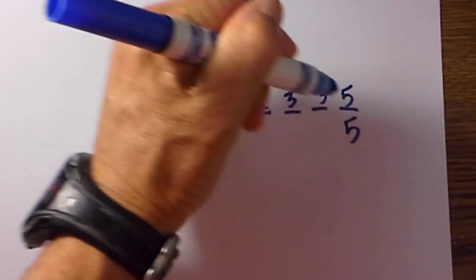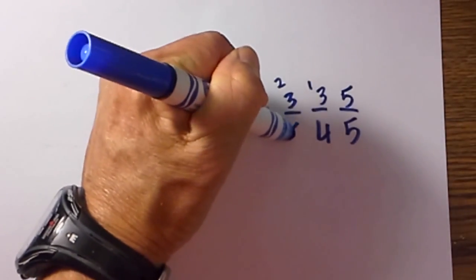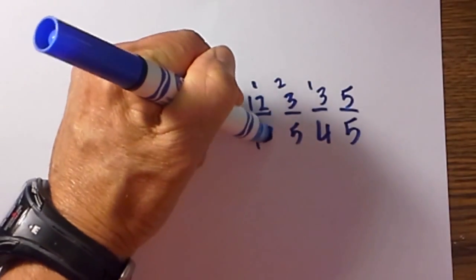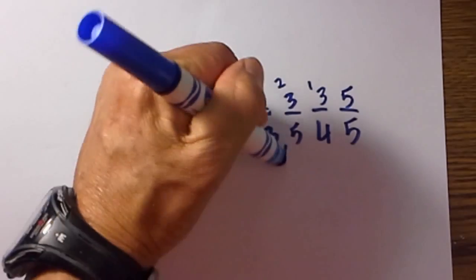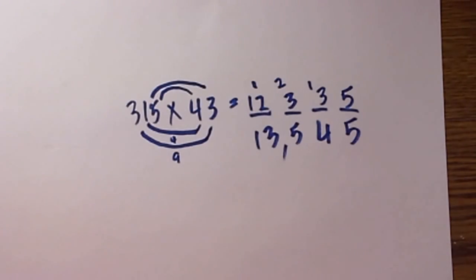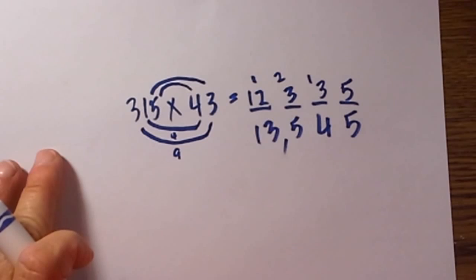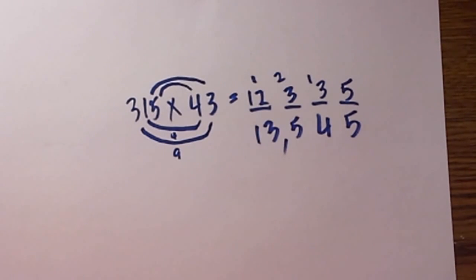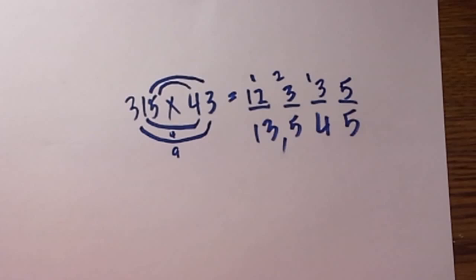Bring the numbers down 5, 4, 5, 13, so the final answer is 13,545. Hope that helps. Please see the link down below and I've got some more shortcuts for multiplication. Thank you.